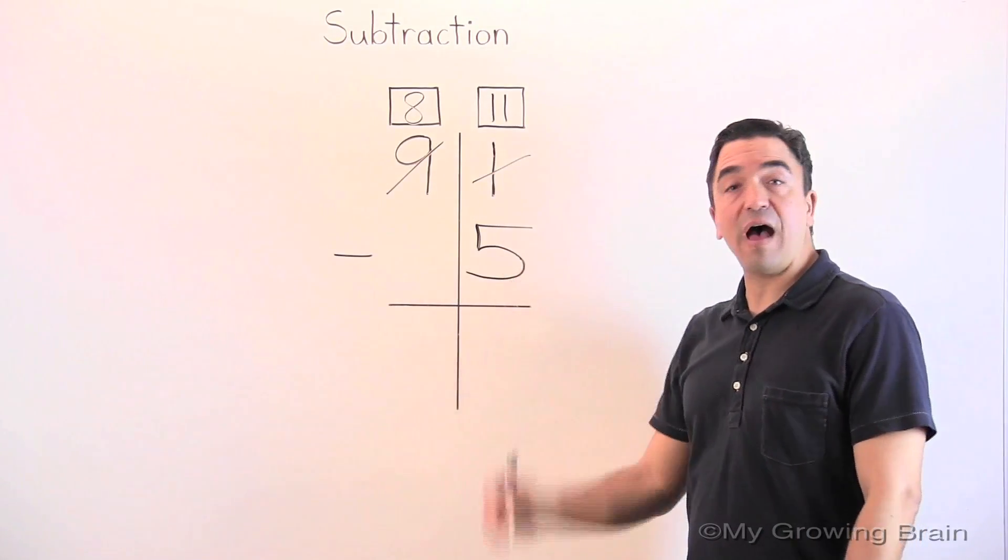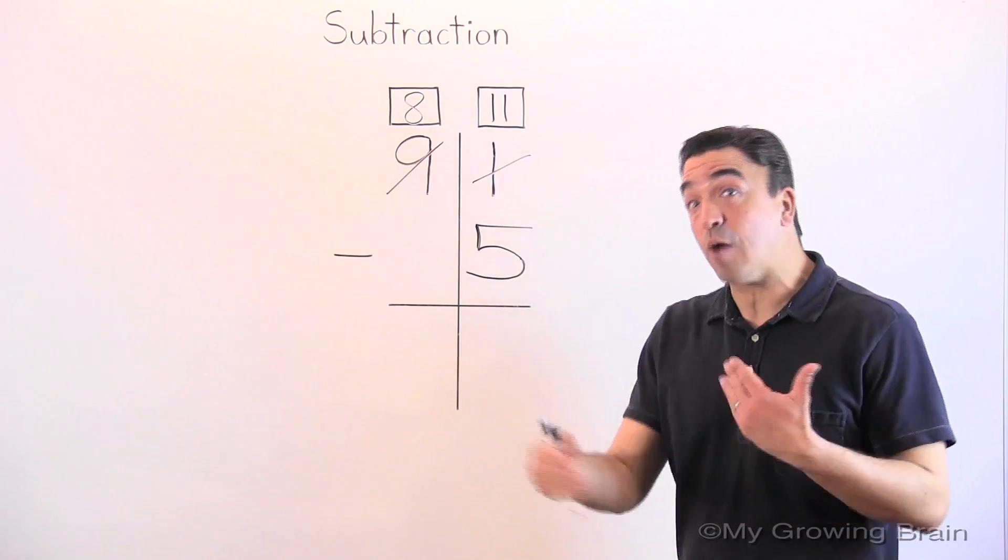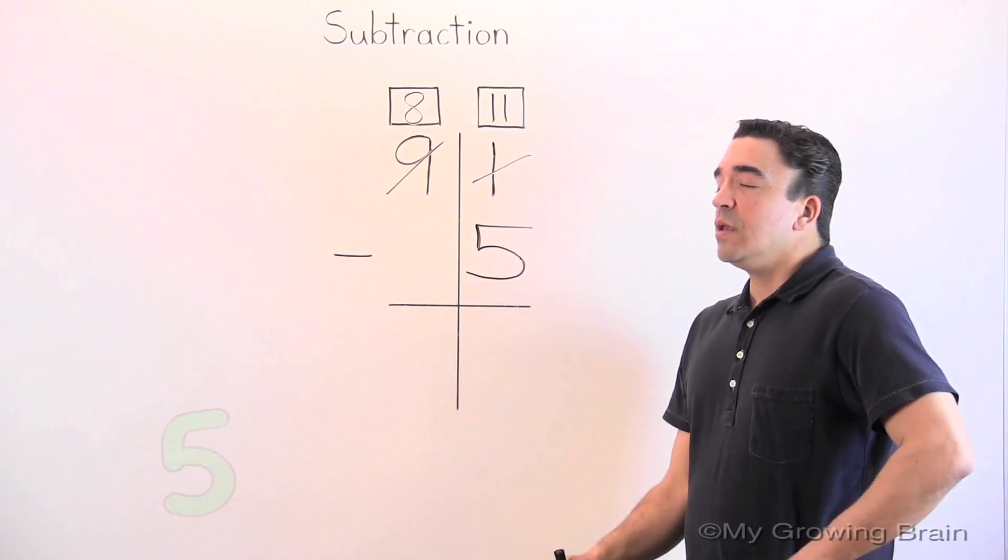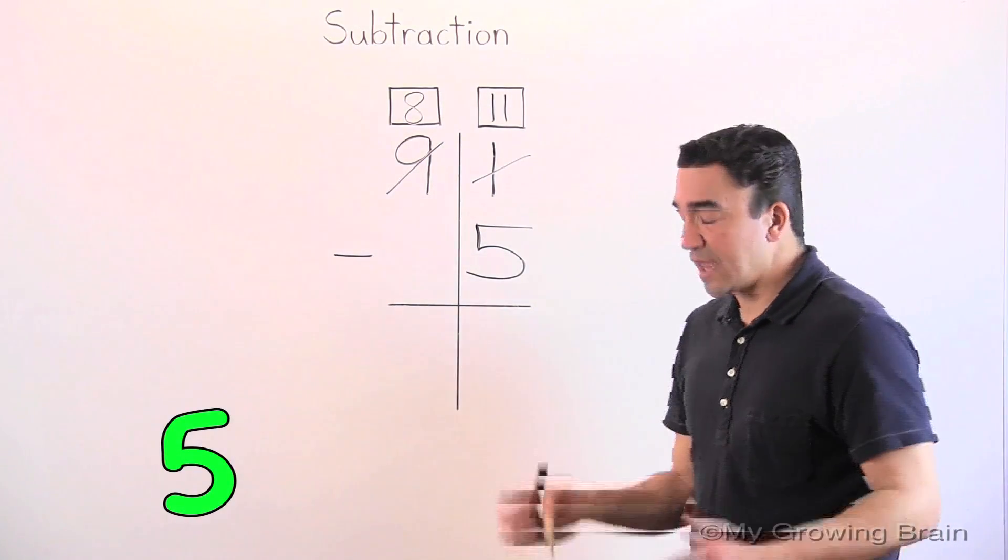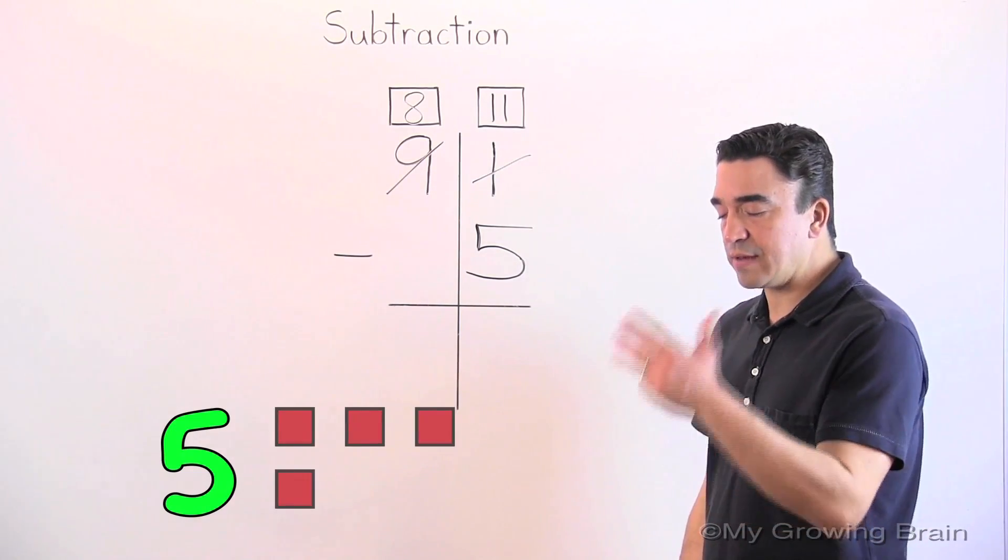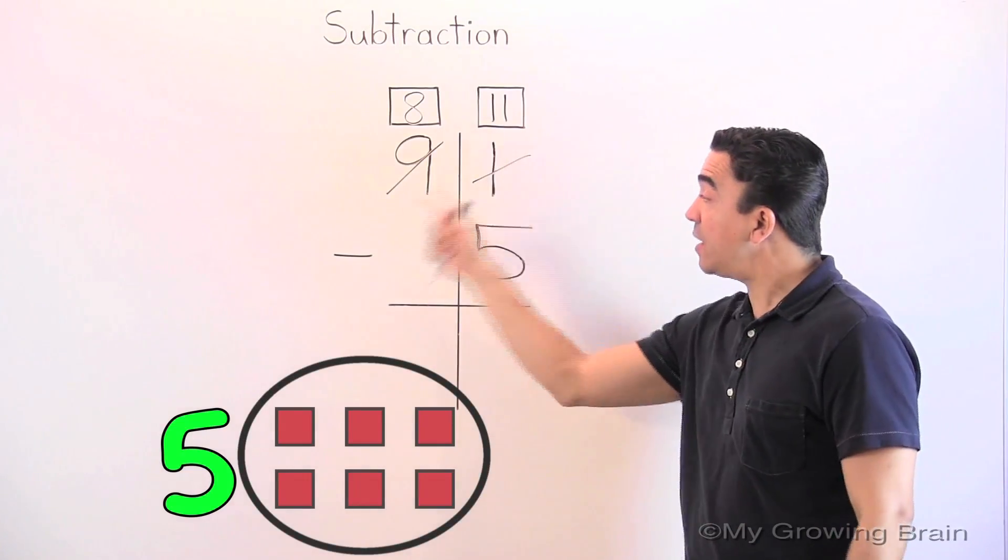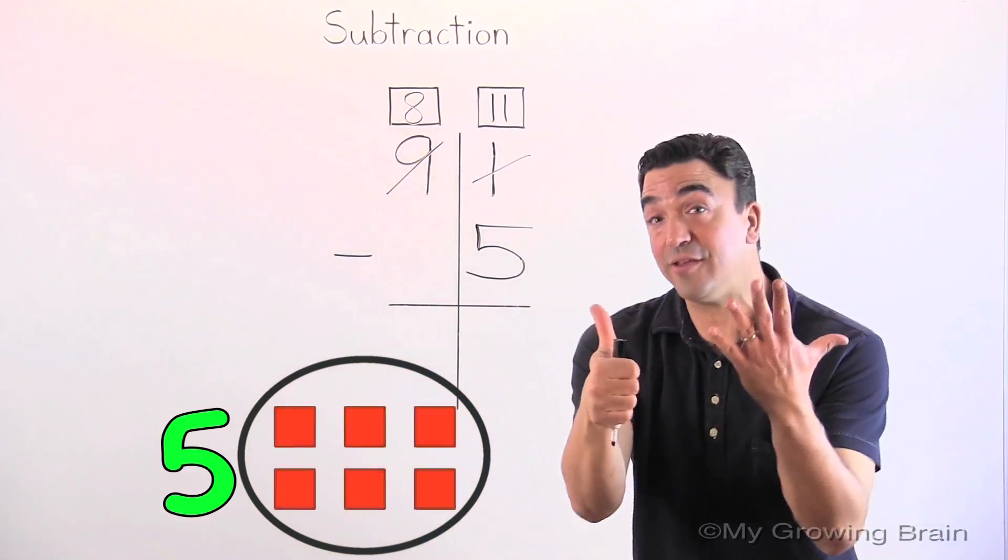Eleven minus five. I'm going to put the five in my head. We're going to count on. There's my five. Here we go. Five, six, seven, eight, nine, ten, eleven. Eleven minus five is six.